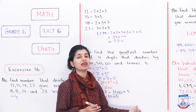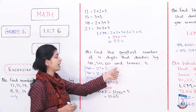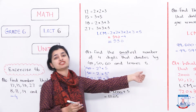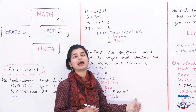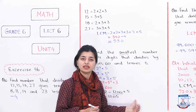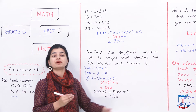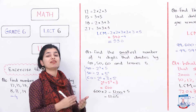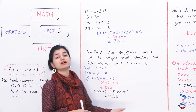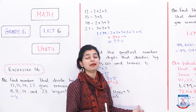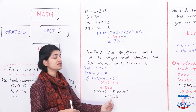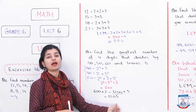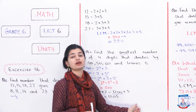After finding 1200, what do we need to do? Our remainder is 5, so we add 5. Because when you divide this number, you will get a remainder of 5. So 1200 plus 5 is 1205. That is our answer for question number 7.